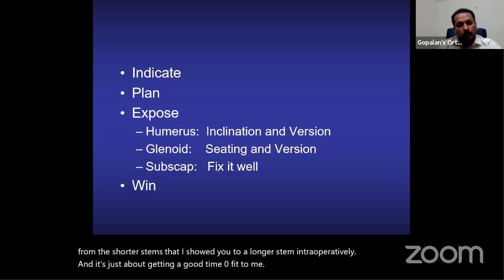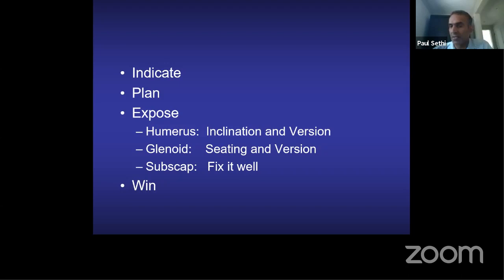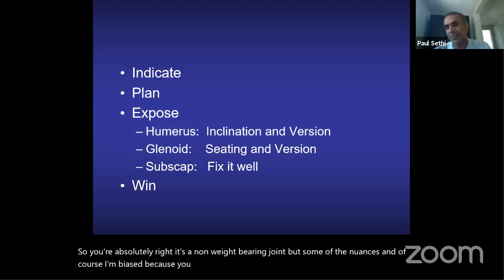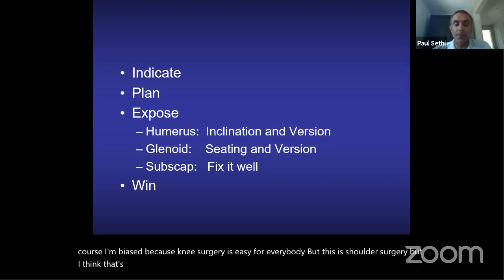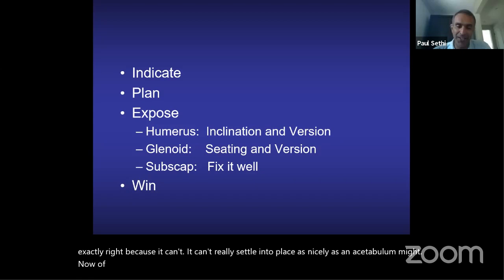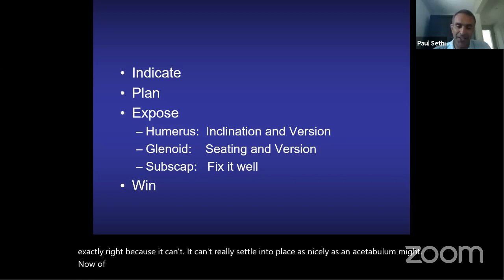Compared to a lower limb arthroplasty, the shoulder is non-weight-bearing — does that make it easier? You're absolutely right that it's non-weight-bearing, but it's very important to get the subscapularis, the seating, and the glenoid exactly right, because the shoulder can't settle into place as nicely as an acetabulum might. Of course, lower limb surgery is equally complex — I'm only teasing.